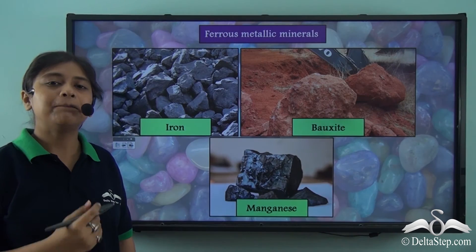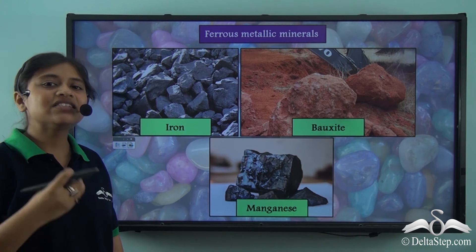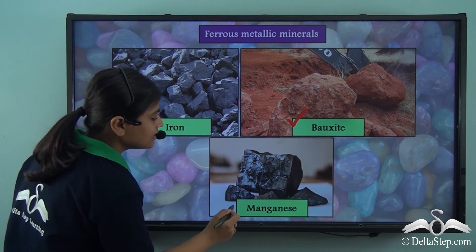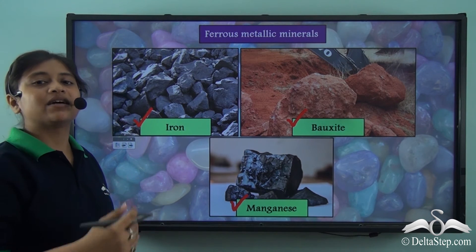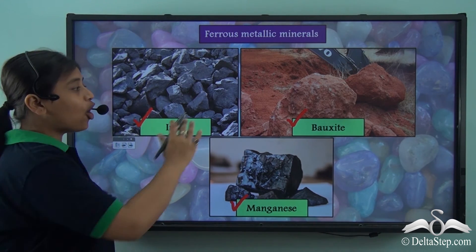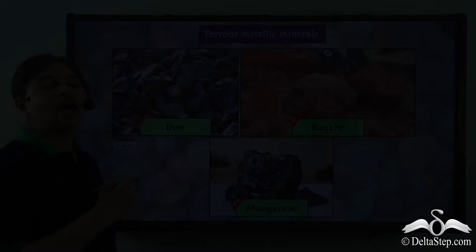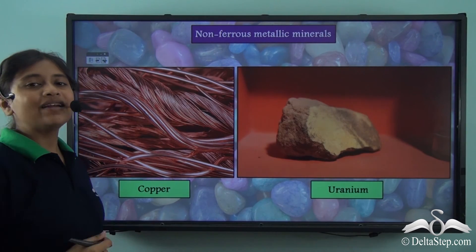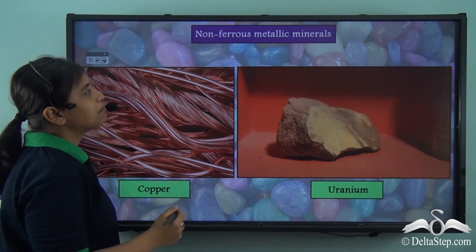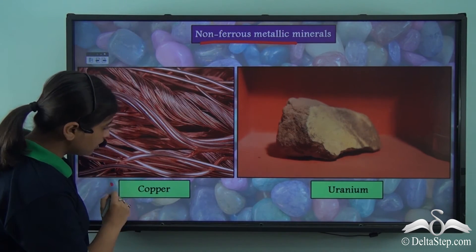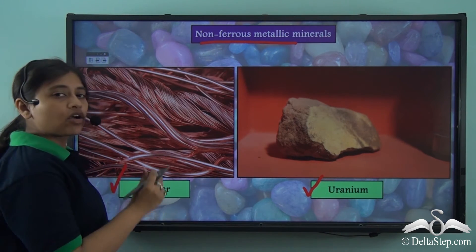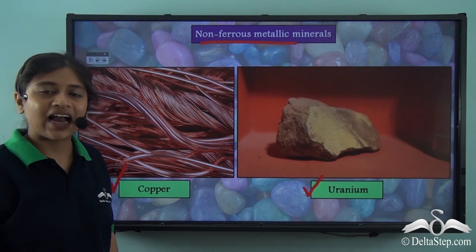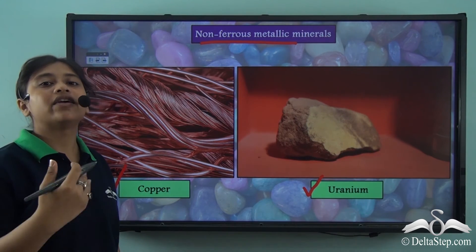Here are pictures of some examples of ferrous metallic minerals: iron, bauxite and manganese. All of these weigh more compared to non-ferrous minerals, show magnetic properties and are less resistant to corrosion. Common examples of non-ferrous metallic minerals are copper and uranium, which show no magnetic properties, contain no iron, weigh less and are more resistant to corrosion.